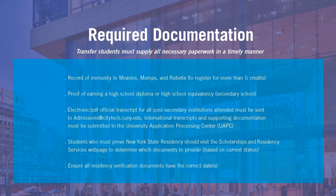When transferring into the college, students must supply all necessary paperwork in a timely manner. Required documentation includes record of immunity to measles, mumps, and rubella in order to register for more than five credits. Proof of earning a high school diploma or high school equivalency degree. An electronic or PDF official transcript for all post-secondary institutions attended must be sent to admissions at citytech.cuny.edu.